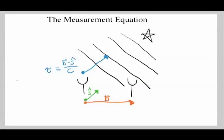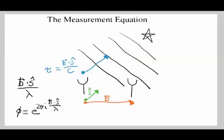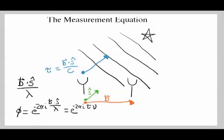Equivalently, if we were looking at one particular frequency, we could measure the number of wavelengths between these two antennas. In that case, we take the projection B dot S and divide by the wavelength lambda. So the phase between those two antennas, phi, is e to the 2πi times B dotted into the source direction divided by the wavelength, with a minus sign as a sign convention on which antenna gets hit first. This phase is also equivalent to e to the 2πi times the geometric delay times the frequency you're observing at — these are completely equivalent expressions.